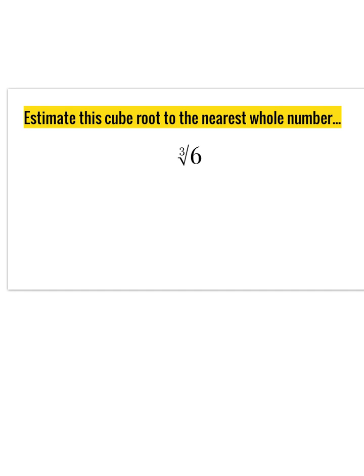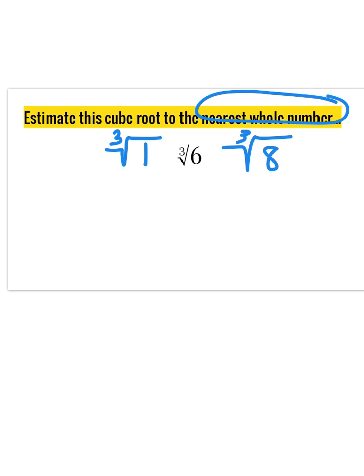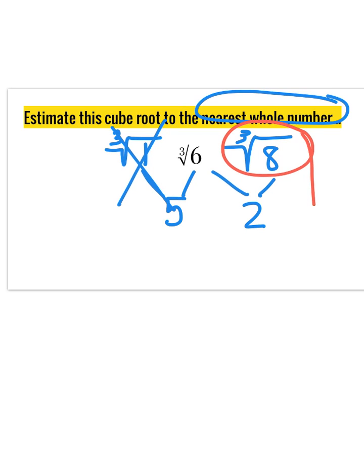Let's go ahead and change to some cube roots, following the same pattern we've been using. 6 is not a perfect cube, but it sits between two other perfect cubes: 1 and 8. I want to know which one gives the nearest whole number estimate. 1 and 6 are 5 apart, and 6 and 8 are only 2 apart. So the cube root of 6 is very close to the cube root of 8, and my estimate is approximately 2.